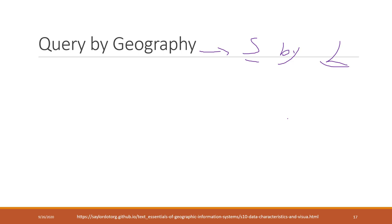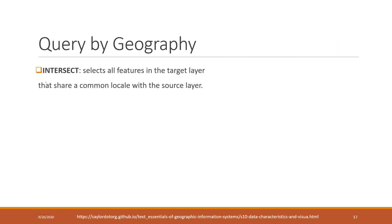You don't need to remember all of those geographic queries — I don't remember all of them either. Their names are already very intuitive, so just by looking at the names you will know what they are talking about. Let's look at one as an example: intersect.